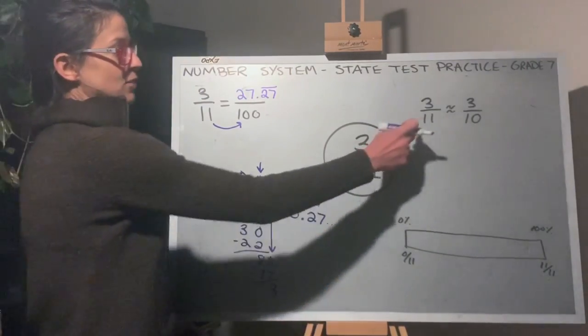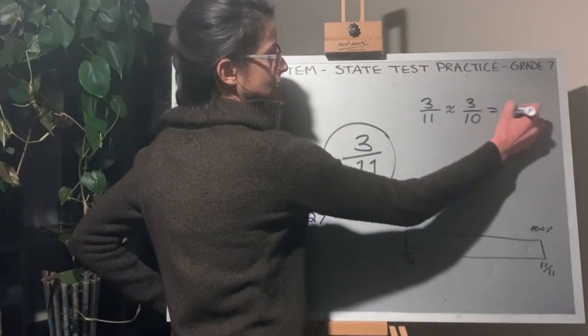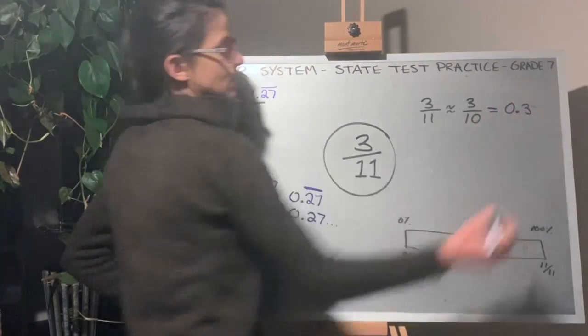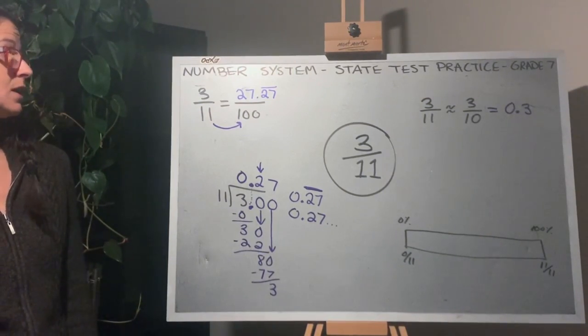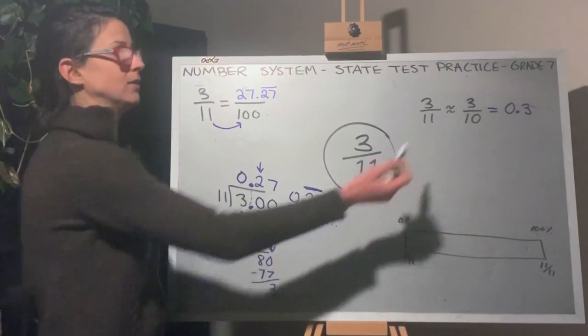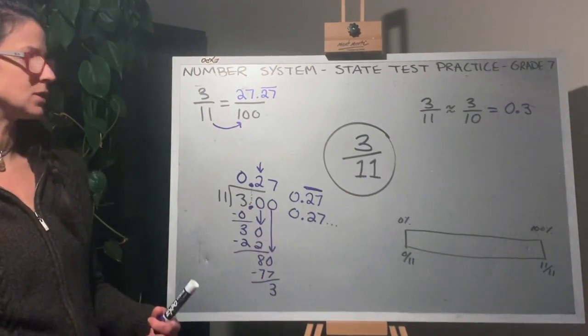We can estimate that 3 elevenths is going to be close to 3 tenths, and 3 tenths as a decimal is 0.3. And you can see that 0.27 would round up to 0.3. So that's an estimation tool to help you check, did I do this correctly?